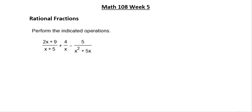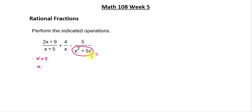Anytime you are trying to add fractions together, we can only add them if they have the same denominators. So the first step is to list out the denominators of each individual fraction and then find the least common denominator, or LCD. For the first fraction we have x plus 5, for the second we have just x, and for the last one we have x squared plus 5x. We should factor out the common factor — pulling out x gives us x times x plus 5.